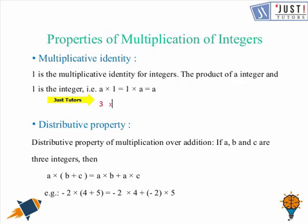Let's have an example: 3 times 1 is equal to 1 times 3, which is equal to 3. So this is how 1 is actually the multiplicative identity for all the integers.